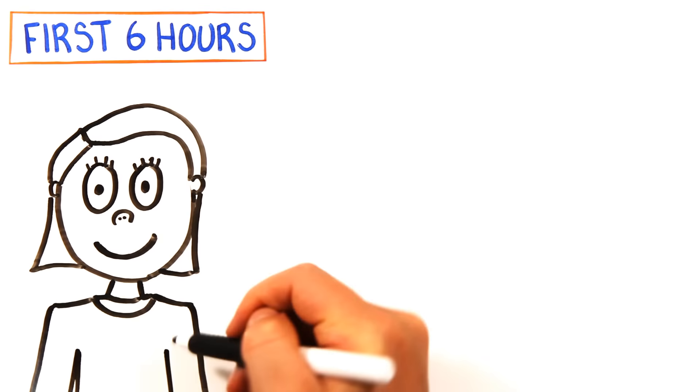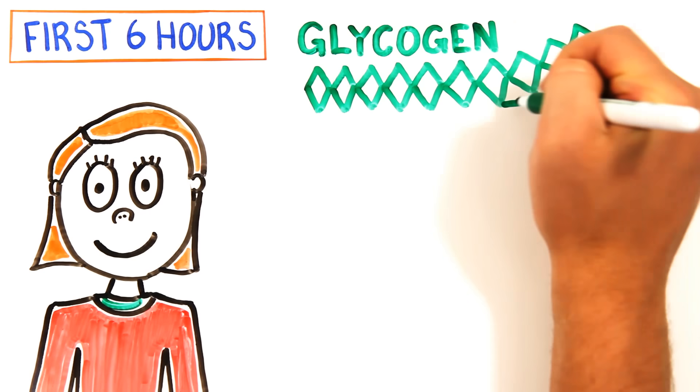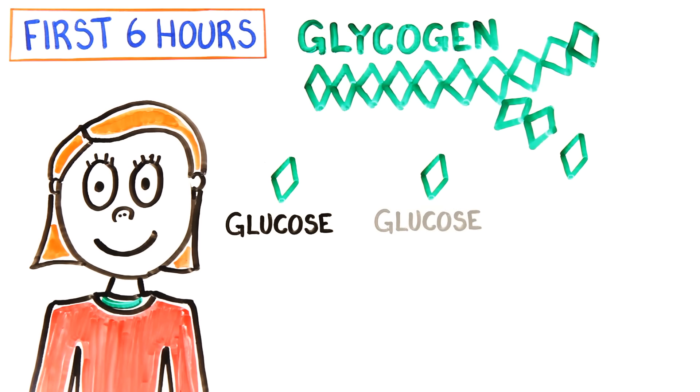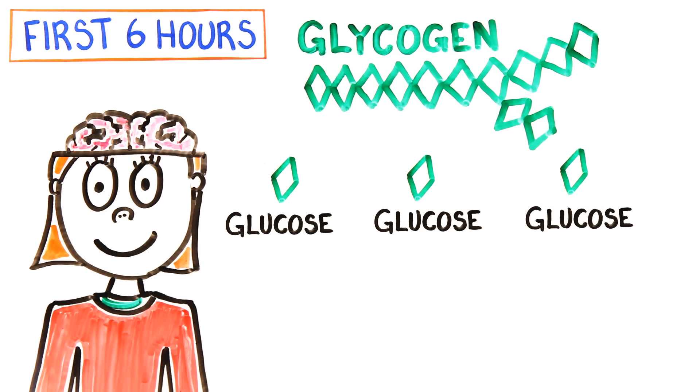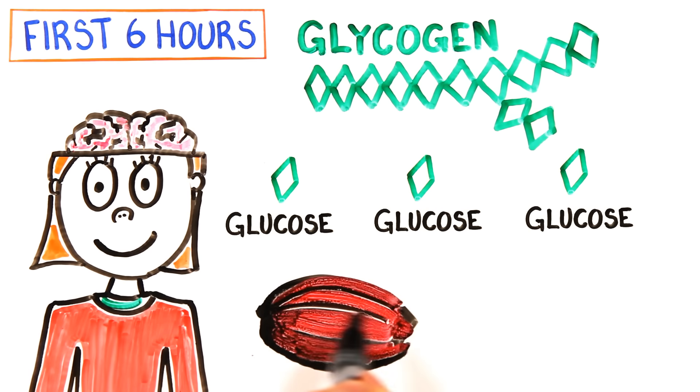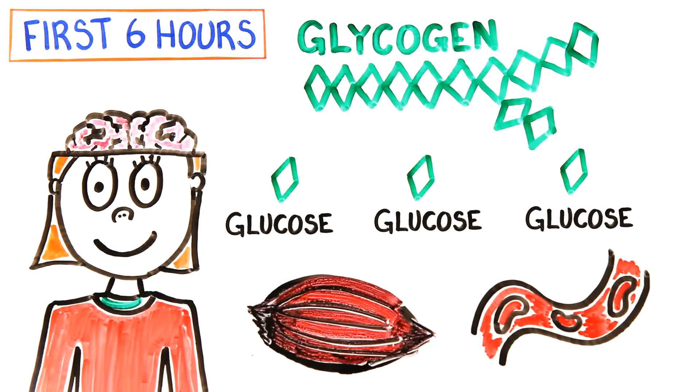Your body begins to break down glycogen, which stores energy in your body, into glucose, which your cells use as fuel. Around 25% of energy generated this way is used for your brain alone, while the rest goes to muscle tissue and red blood cells.